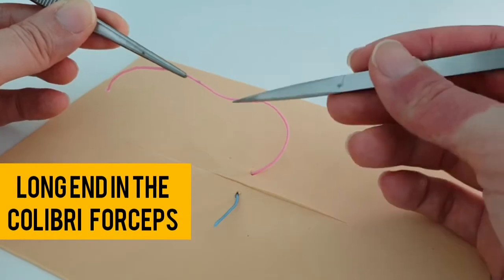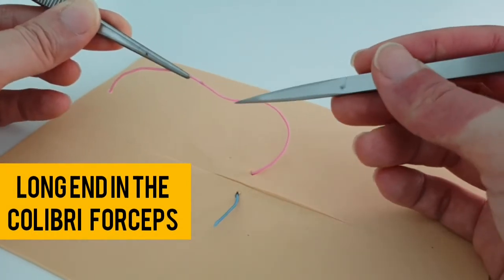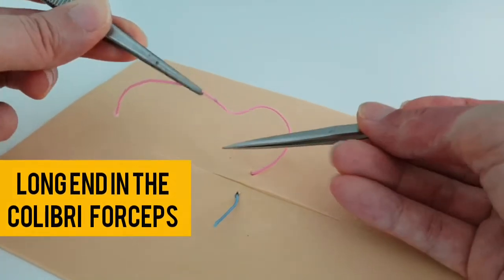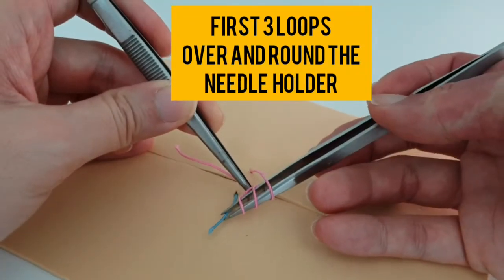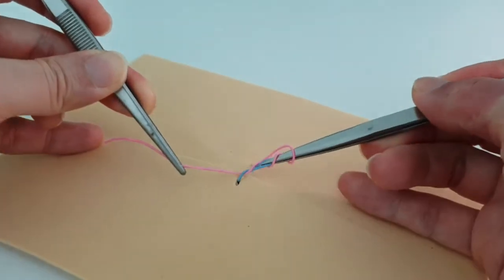You want to hold the long end of the suture with your forceps. You want to go one, two, and three. Grab the short end and then pull it through.